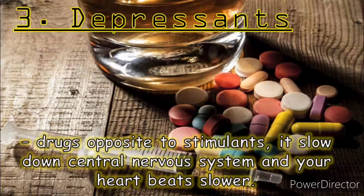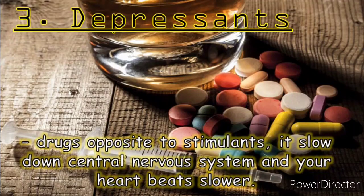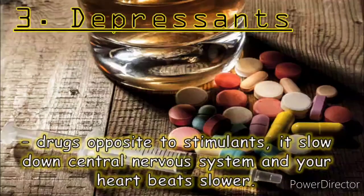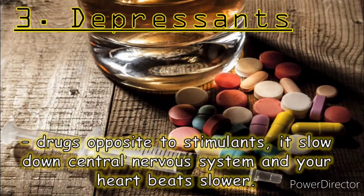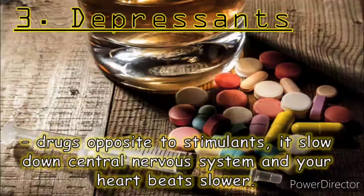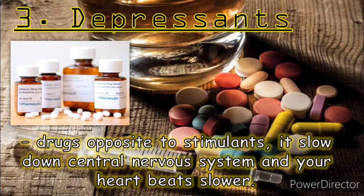Number three, we have depressants. These are drugs that have the opposite effect of stimulants — they slow down the central nervous system. This makes your heart beat slower, breathing gets slower, blood pressure goes down, and the body may feel relaxed. These drugs include alcohol, tranquilizers, inhalants, and solvents like glue.